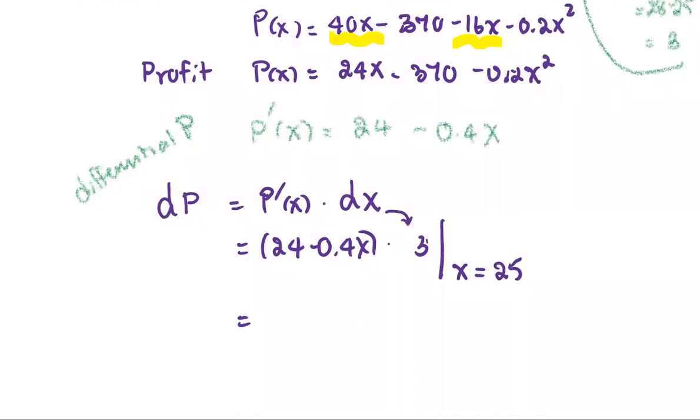Now we're going to replace the number 25 into the x. 24 minus 0.4 times 25, and then multiply by 3. 25 times 4, that's 10. So this part is 10.